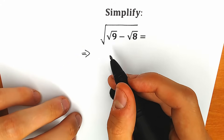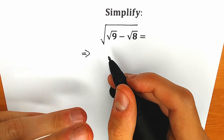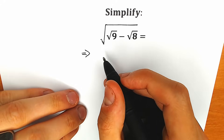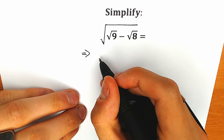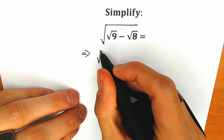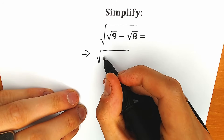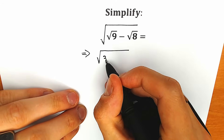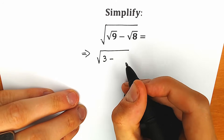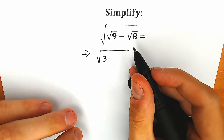First of all, square root of 9 equals 3 — everyone knows about it, so let's start with that. So we have square root of 3 minus square root of 8.